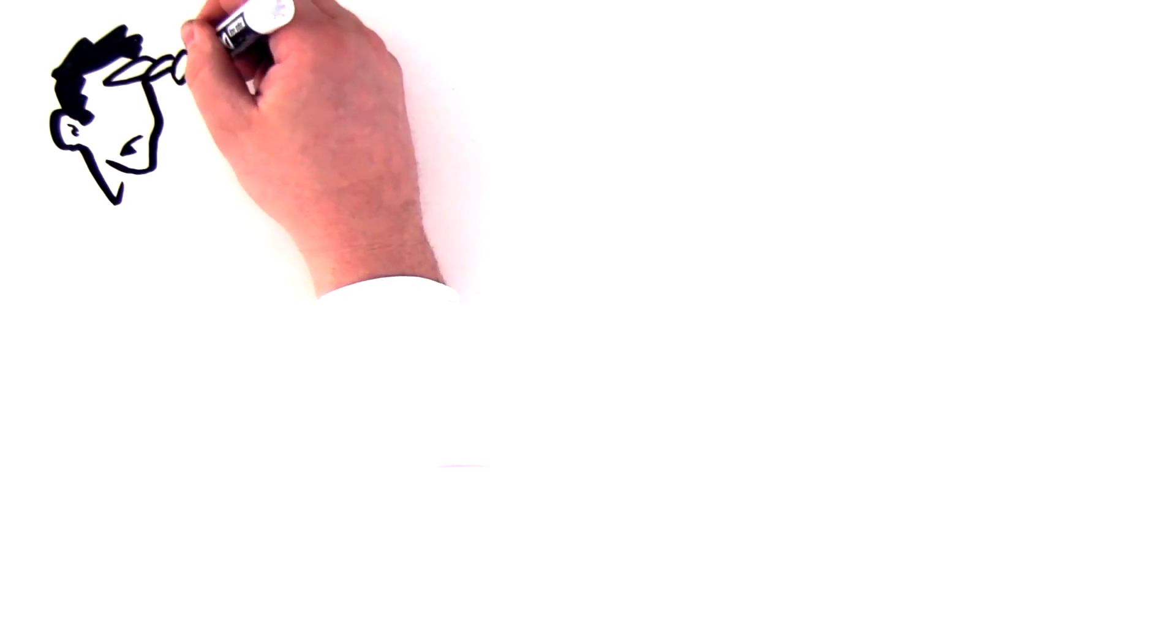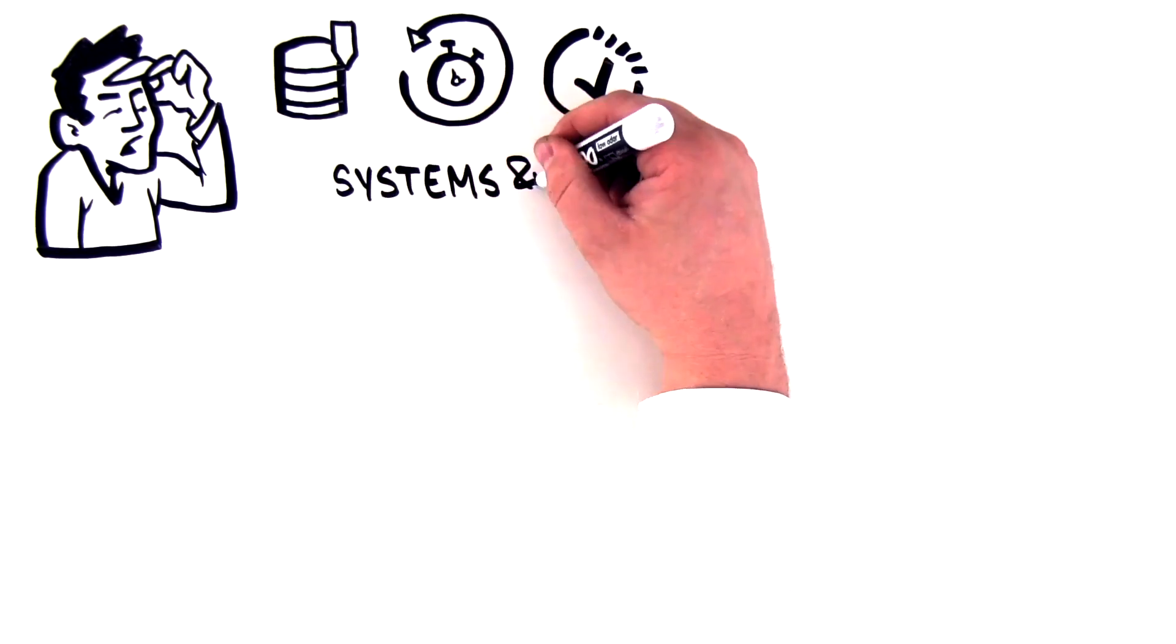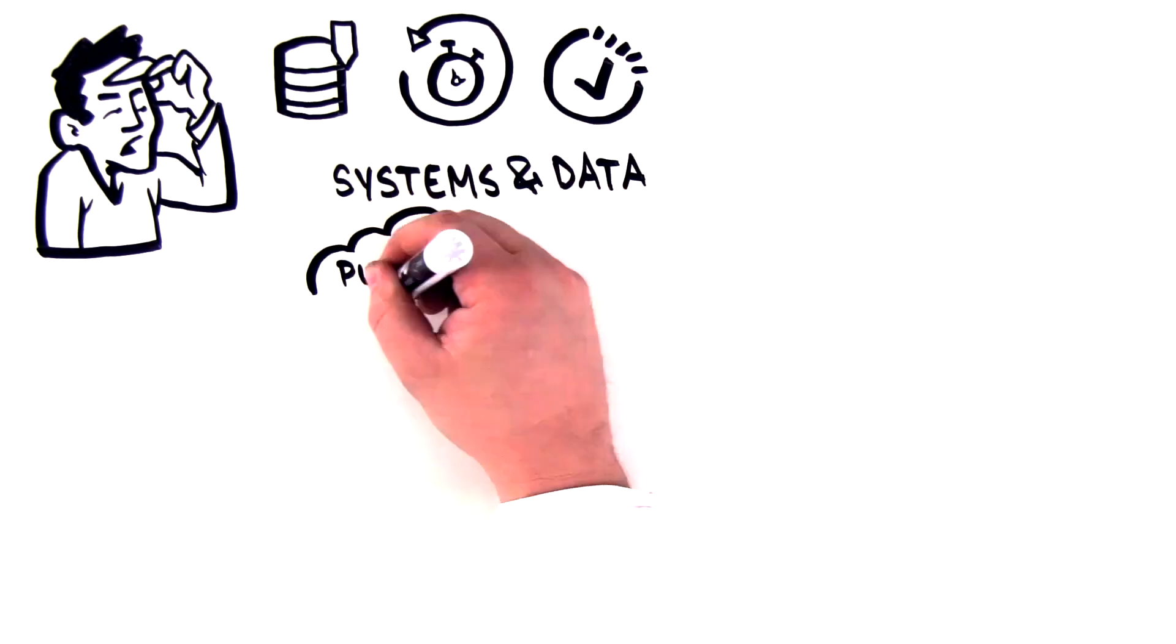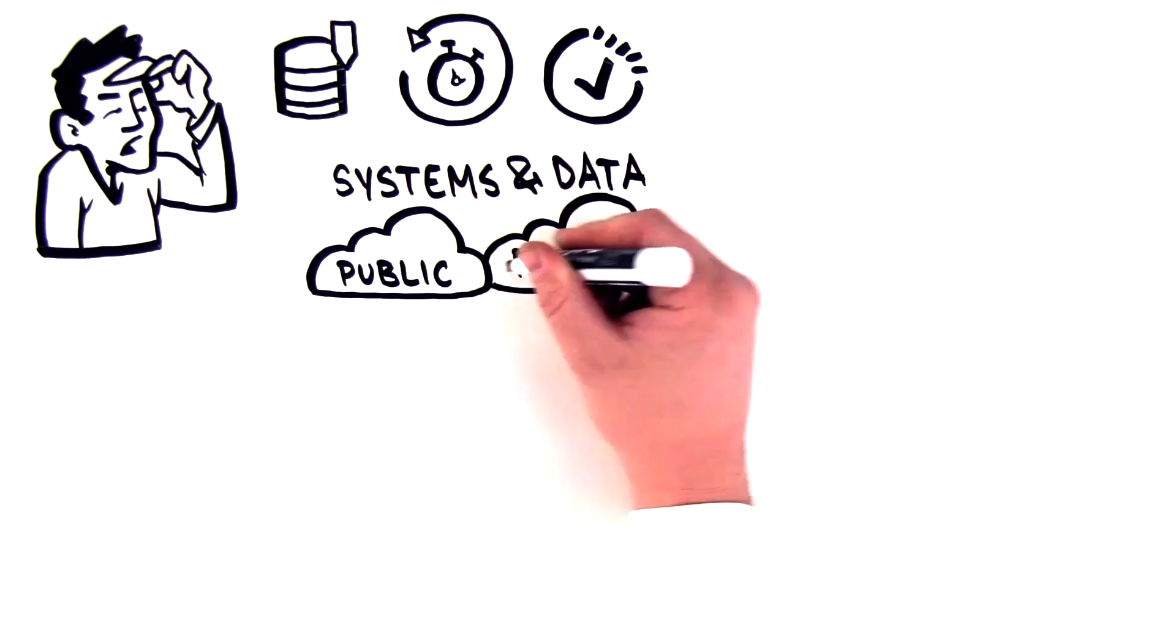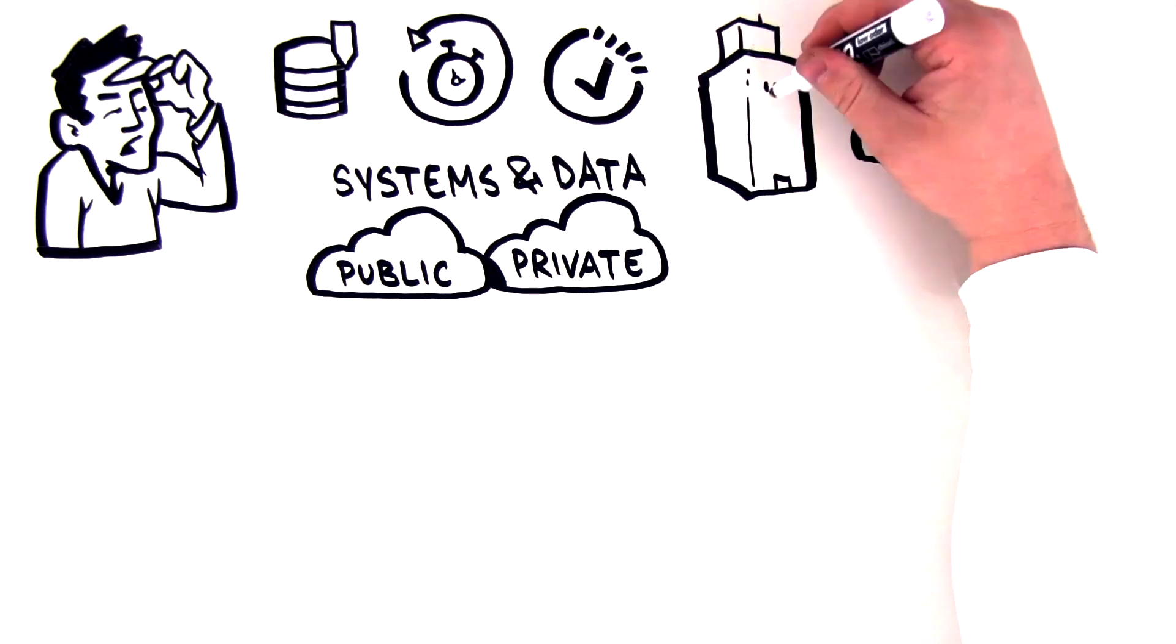Now, what would it look like if you could bundle backup, DR, and high availability for all of your systems and data, and integration with public and private clouds? What if there was a step between fully on-premises and pure SaaS?